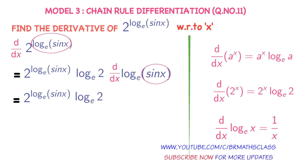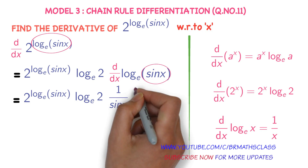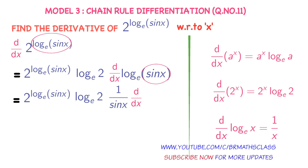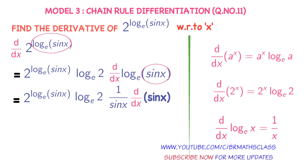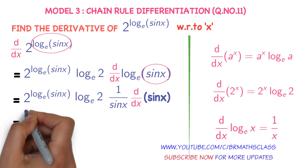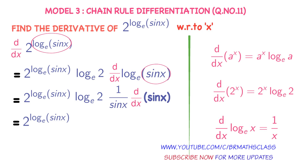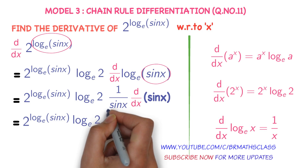So the derivative of logarithm of sine x base e is 1 by sine x, into the derivative of what you imagined as x — that is, the derivative of sine x. That gives us: 2 power logarithm of sine x base e, into log 2 base e, into 1 by sine x, into the derivative of sine x.